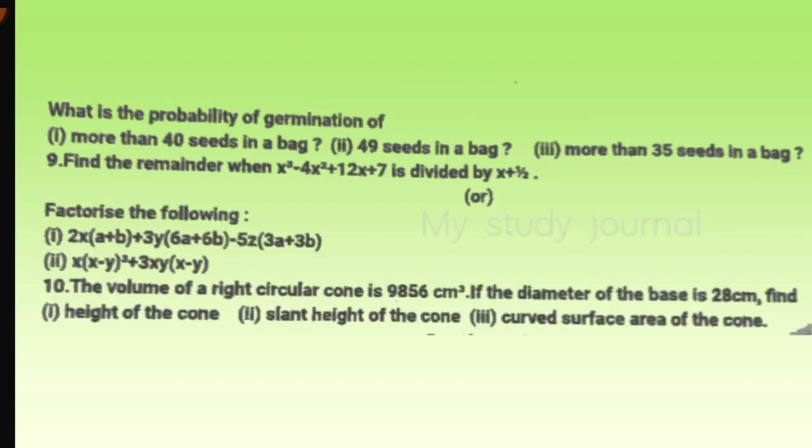That is the record given. Here are the questions: we have to find the probability of germination in more than 40 seeds in a bag, 49 seeds in a bag, more than 35 seeds in a bag. This is probability.